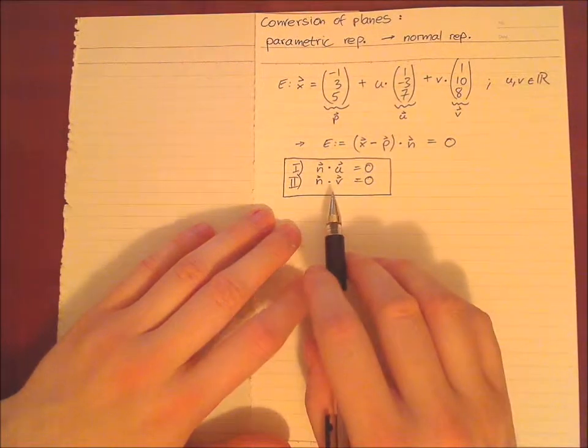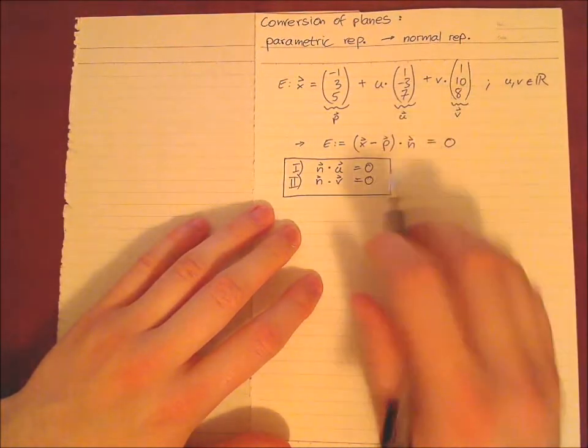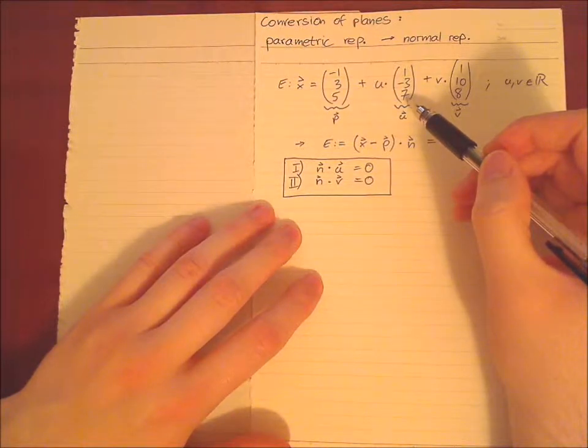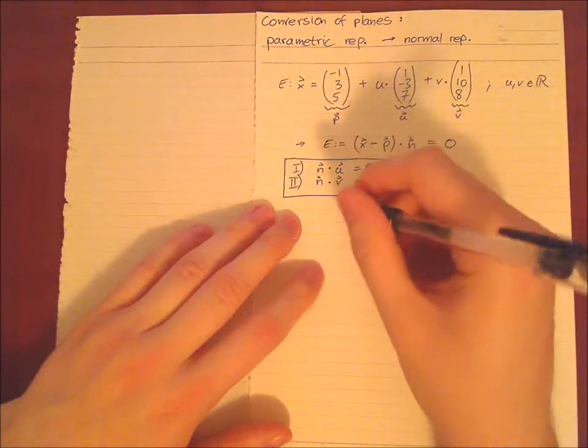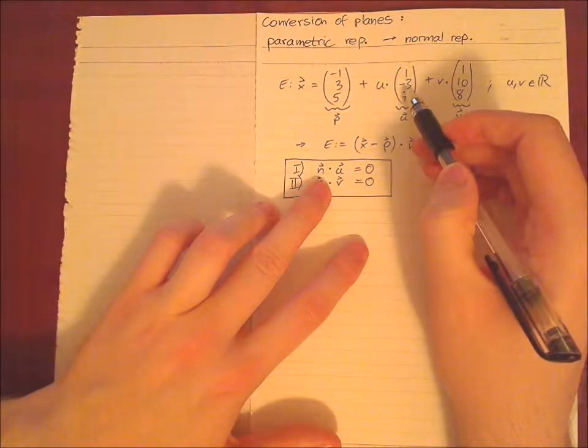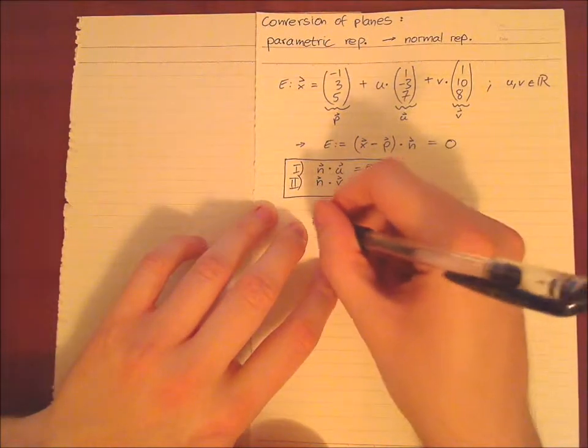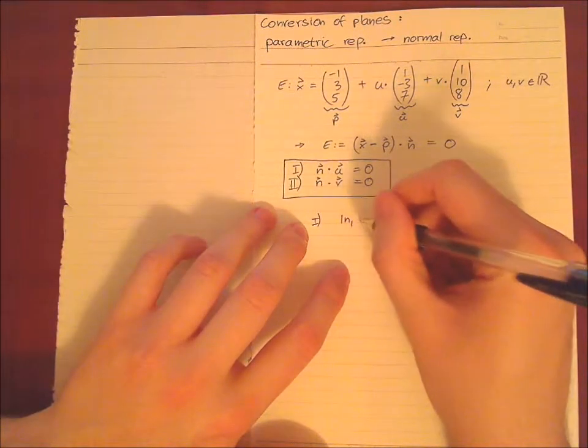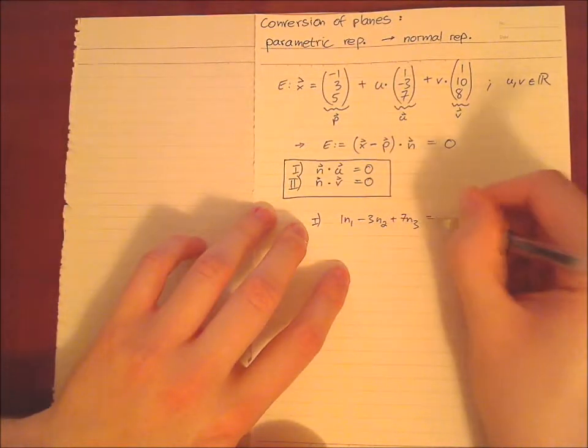And we can solve this with a matrix. So what are we going to do? We just write both vectors component wise. So this times n has to equal zero. So we just say n1·u1 + n2·u2 + n3·u3 equals zero. That's what we are going to do. So we just say one, we have 1·n1 - 3·n2 + 7·n3 equals zero.